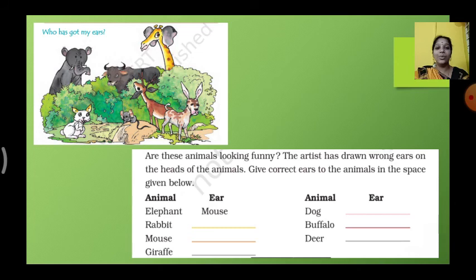So elephant have which ears? Mouse. Rabbit. Mouse. Giraffe has rabbit. Rabbit have giraffe's. Mouse have dog's. Giraffe have elephant's. Like that. Dog, buffalo, and deer have dog have rabbit, buffalo, deer, deer, buffalo.